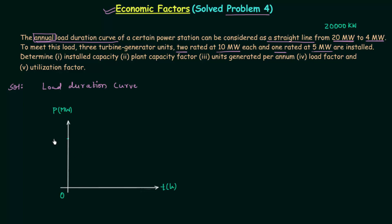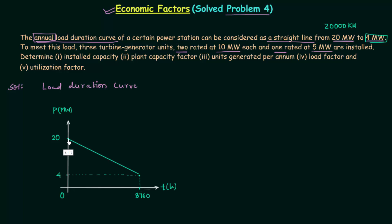On increasing the time from 0 to 8760 hours, the power demand decreases, and when t = 8760 hours the power demand is minimum at 4MW. So we now have two points: (0, 20MW) and (8760, 4MW). Joining these two points gives us the straight-line annual load duration curve.